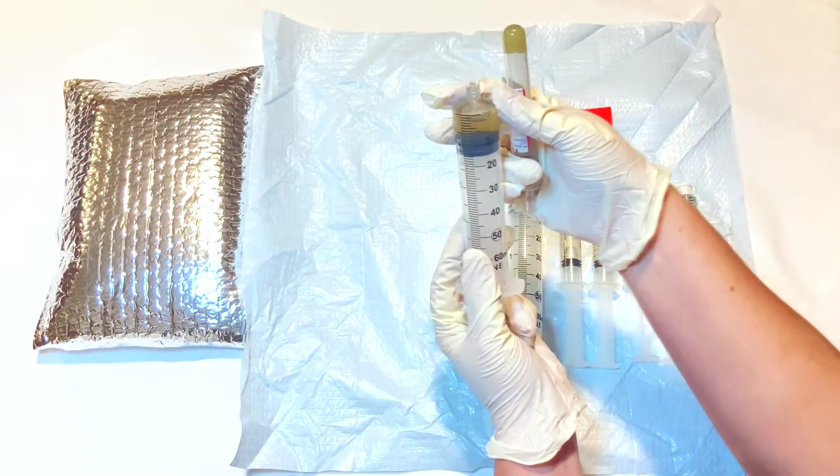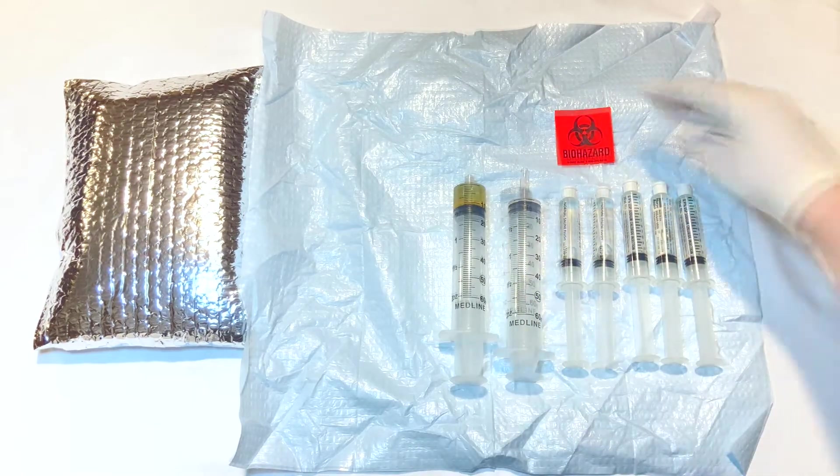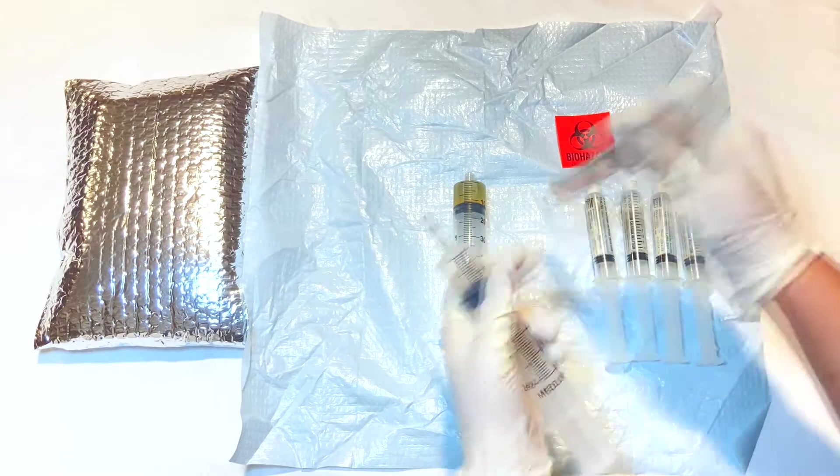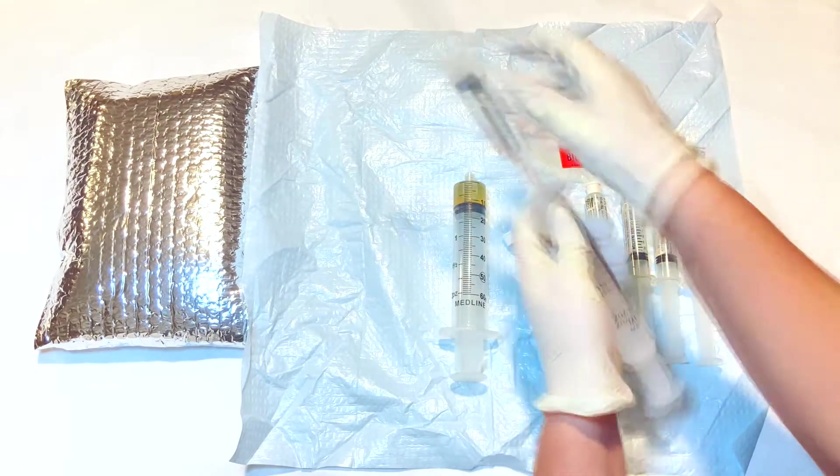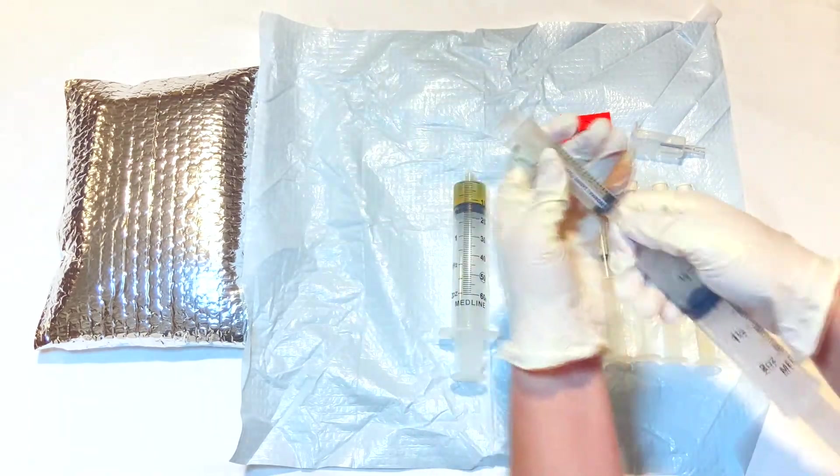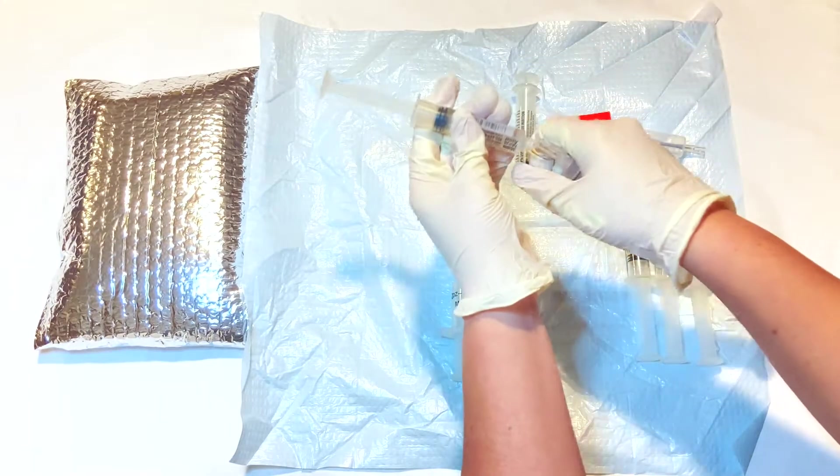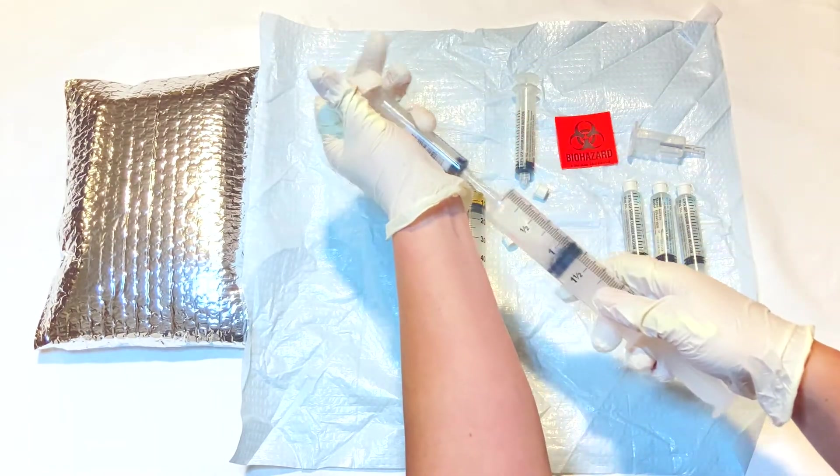Set the filled serum syringe aside. Next, uncap a saline syringe and attach it to the 60 milliliter syringe with the female-to-female luer adapter. Draw the prescribed volume of saline provided in the pre-filled saline syringes.